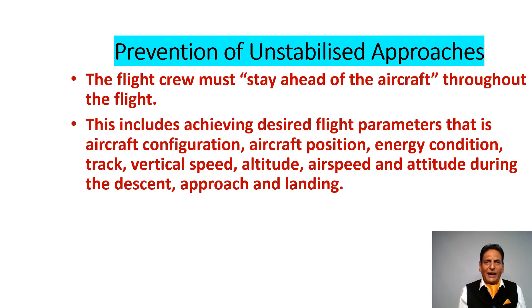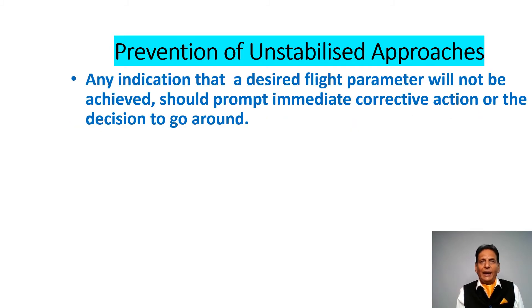The flight crew must stay ahead of the aircraft throughout the flight. This includes achieving desired flight parameters — that is, aircraft configuration, position, energy condition, vertical speed, altitude, airspeed, and attitude — during the descent, approach, and landing. Any indication that a desired flight parameter will not be achieved should prompt immediate corrective action or the decision to go around.